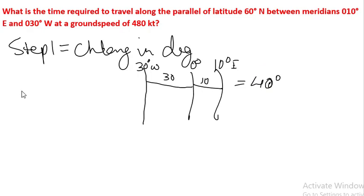This 40 degrees is equal to 40 into 60, which is equal to 2400 minutes.